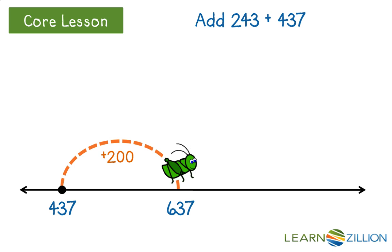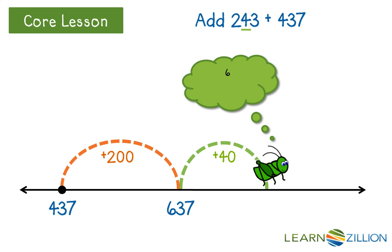Next, we look at the tens place. We need to hop up 40. Keeping track of where we landed, we add 637 plus 40 equals 677, and we mark that on the number line.